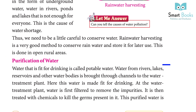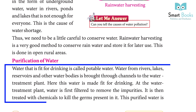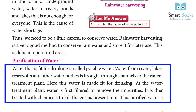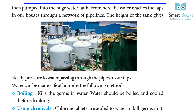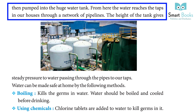Purification of Water: Water that is fit for drinking is called potable water. Water from rivers, lakes, reservoirs and other water bodies is brought through channels to the water treatment plant, where it is made fit for drinking. At the water treatment plant, water is first filtered to remove impurities, then treated with chemicals to kill the germs. This purified water is pumped into a huge water tank, from where it reaches the taps in our houses through a network of pipelines.